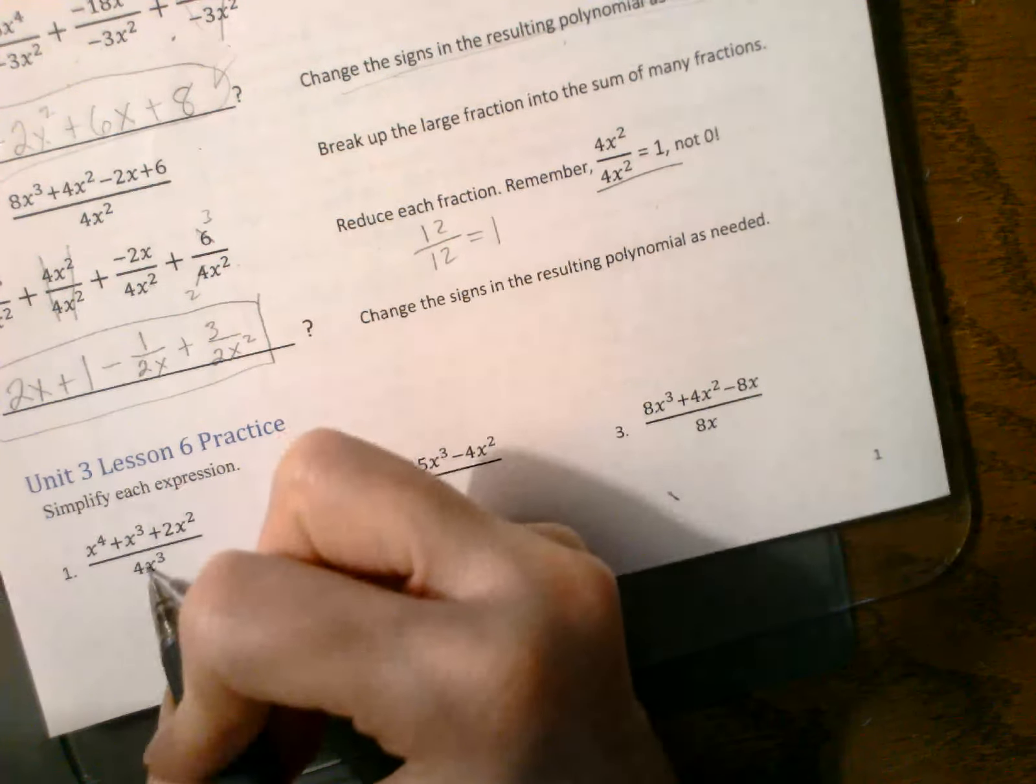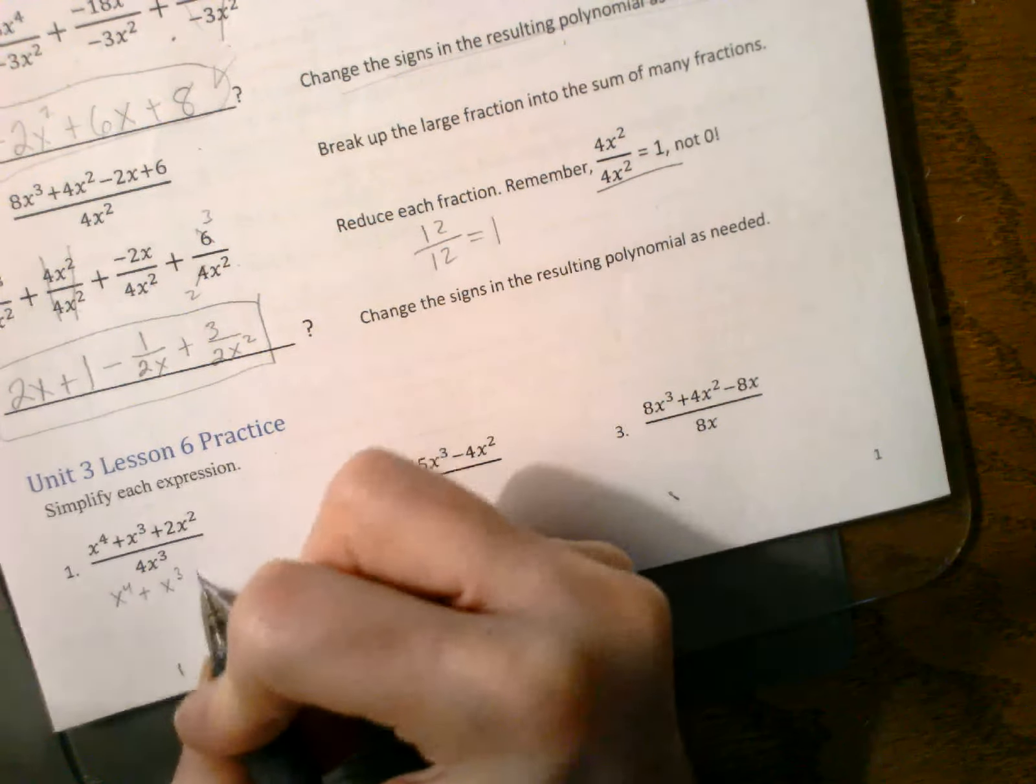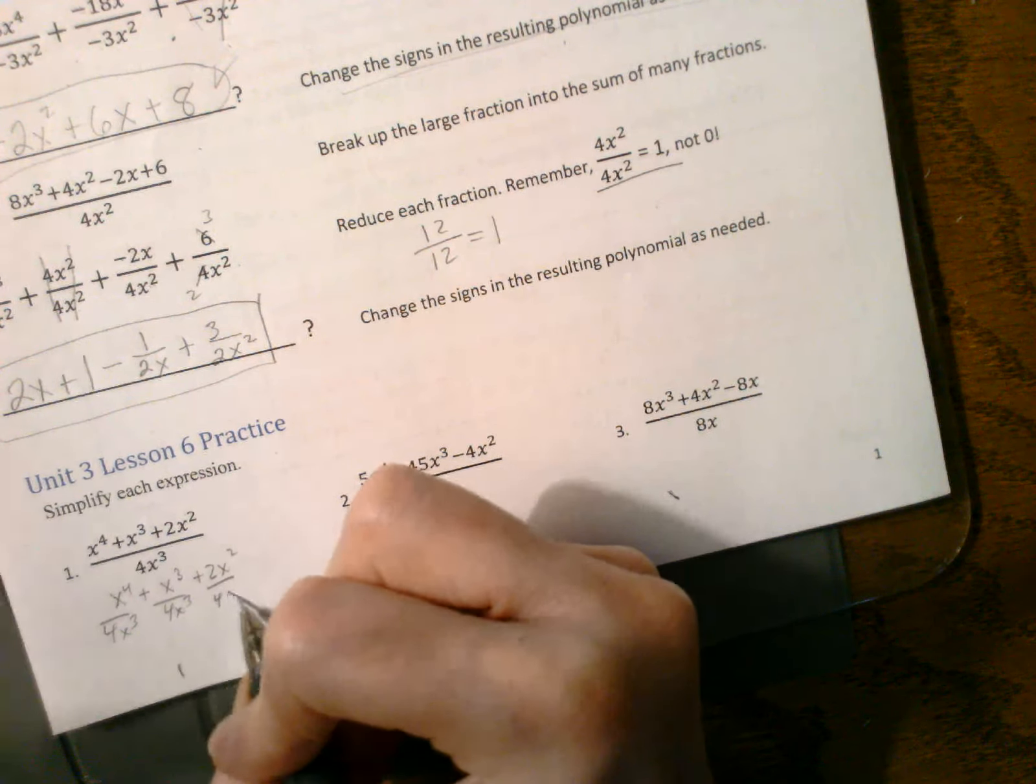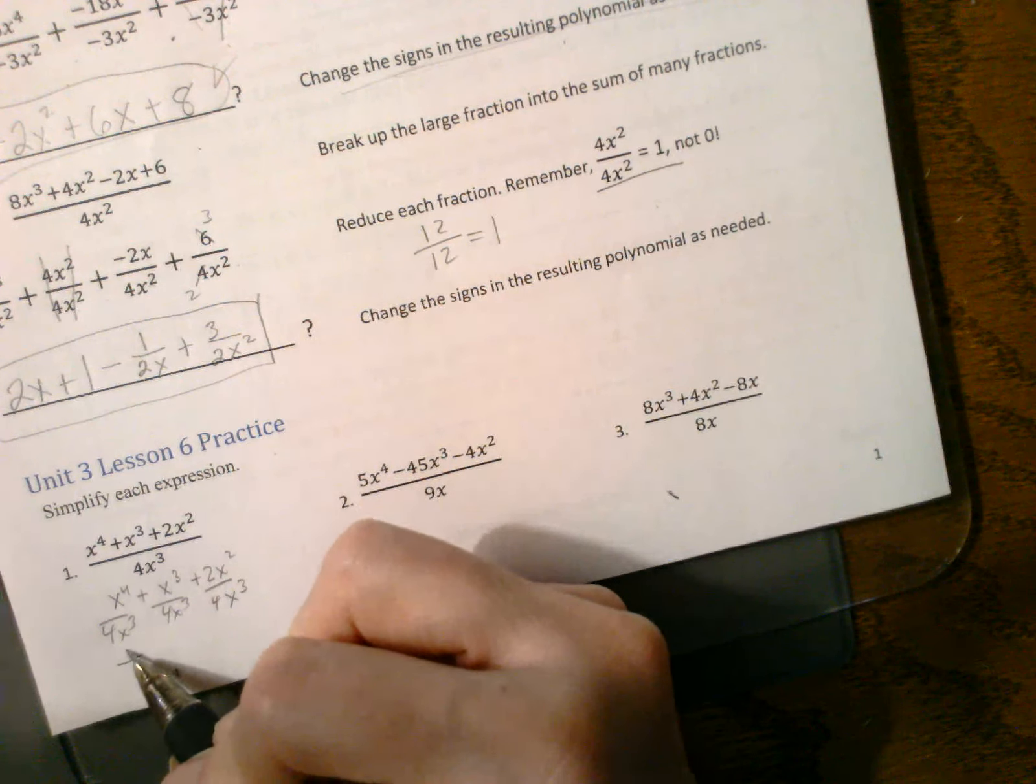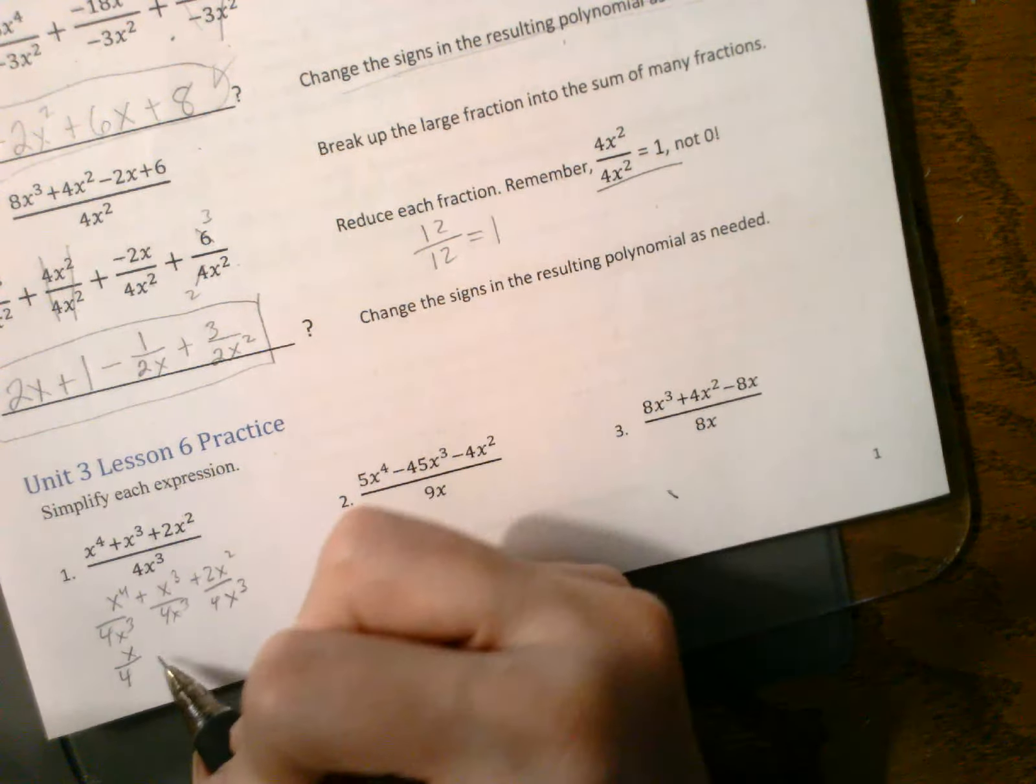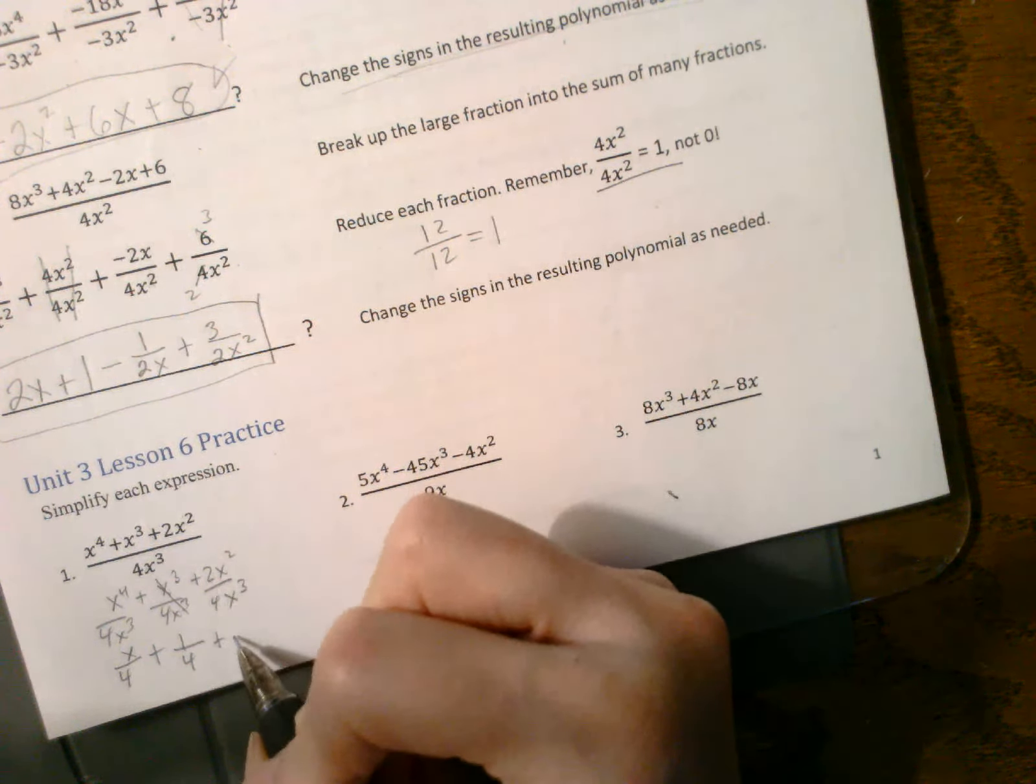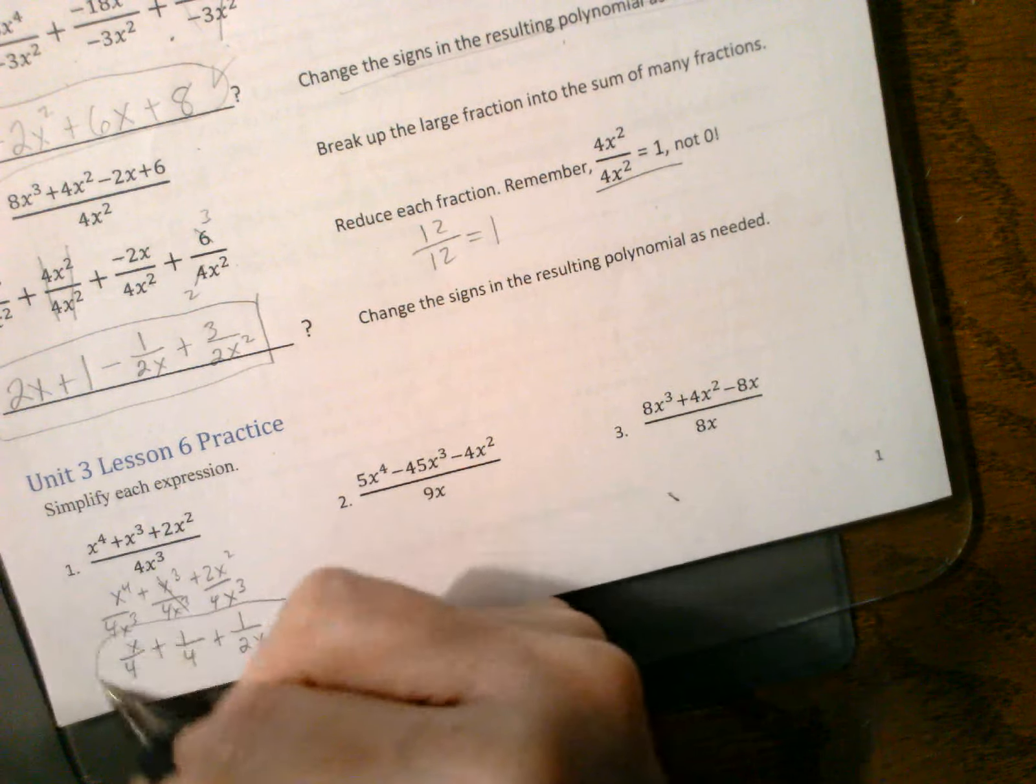And we have x to the 4th plus x to the 3rd plus 2x squared, divided by 4x to the 3rd. So we have an extra x on top. 4 stays underneath. So that's just x over 4. This one is just a 4. This one is a 2 and an x. So put a 1 there. So there's that one.